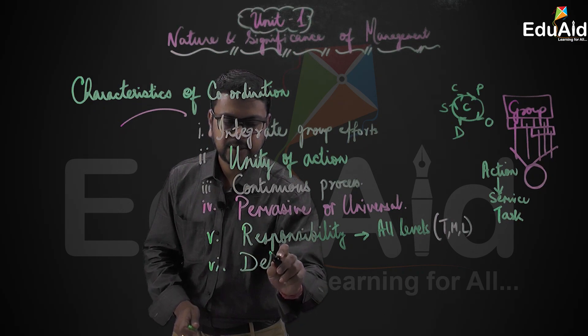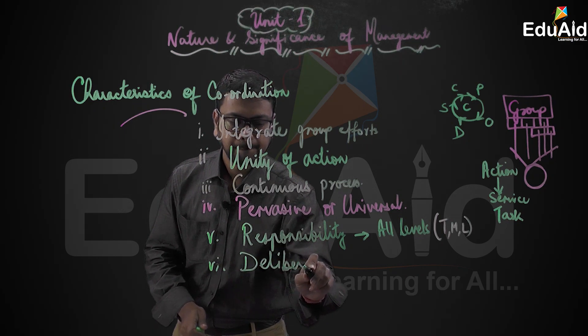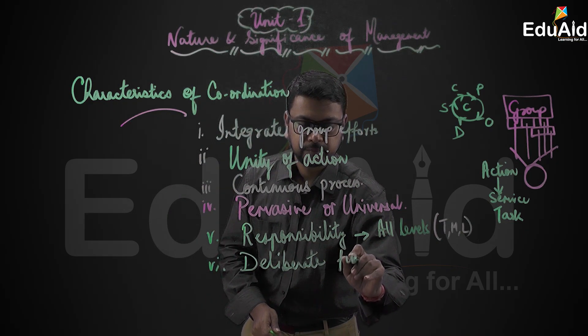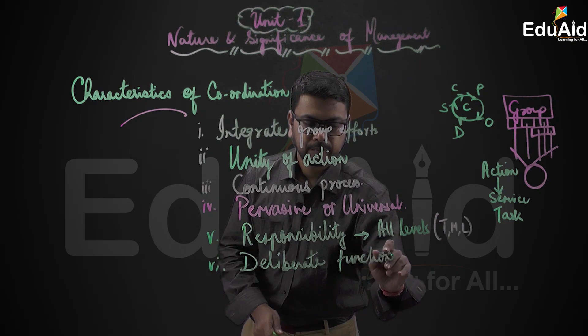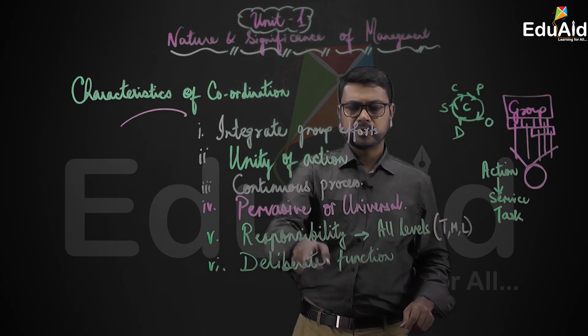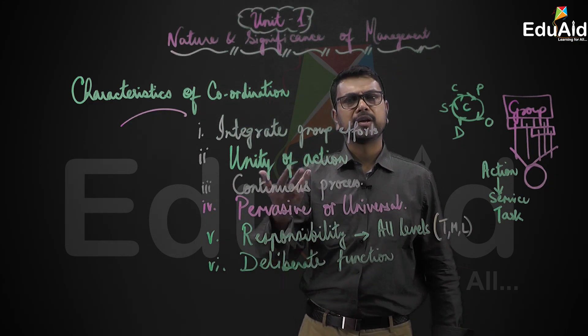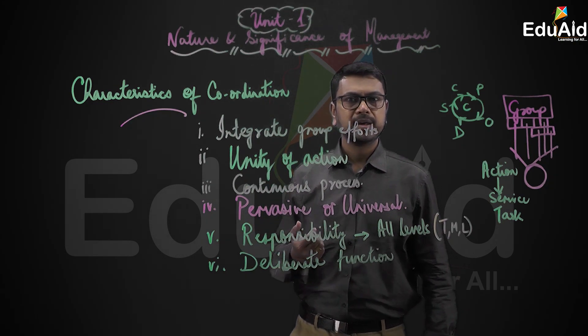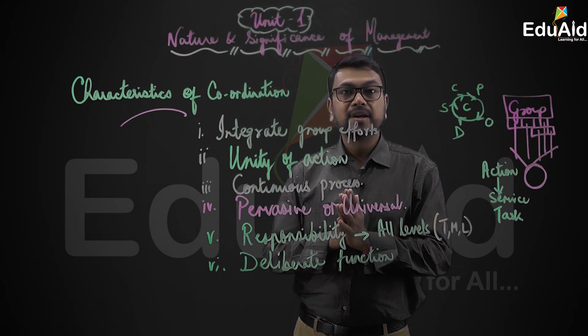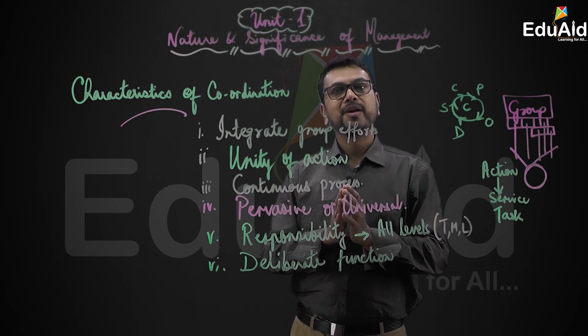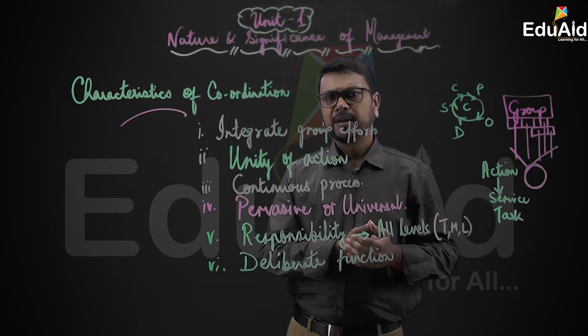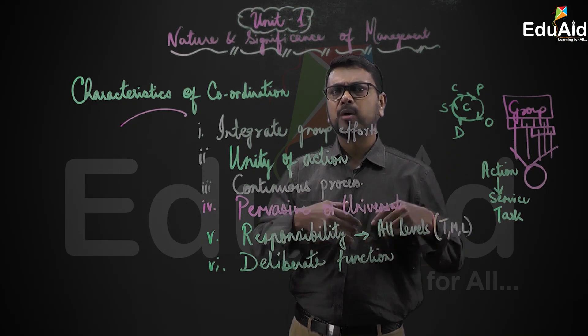It is a deliberate function. Already I mentioned it's a continuous process. So it is a deliberate function or a continuous activity. Deliberate means you will actually coordinate. Without communication the coordination cannot happen. So when you are coordinating you are communicating. You are interacting. So it's a deliberate process so that doubts are clarified.